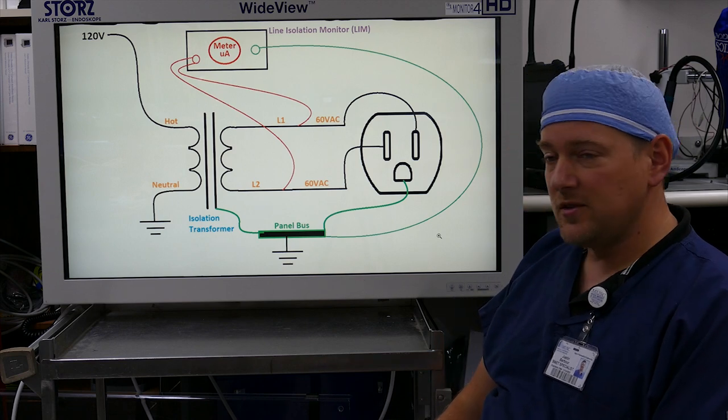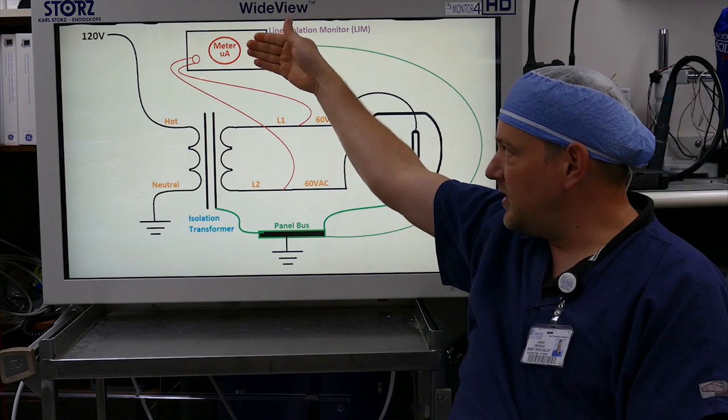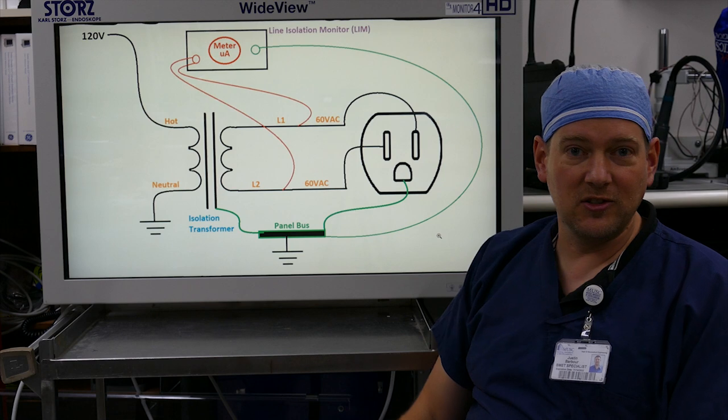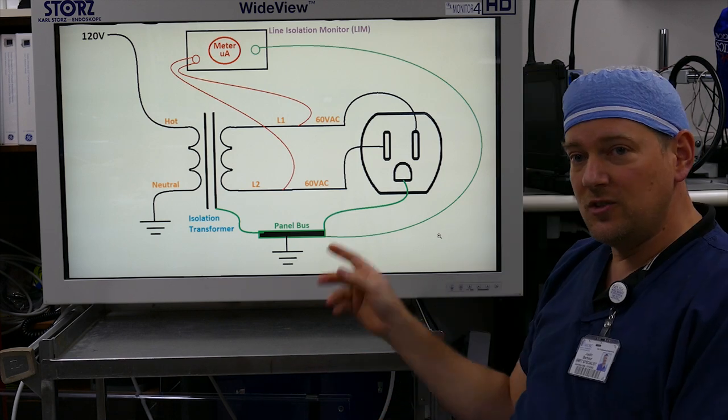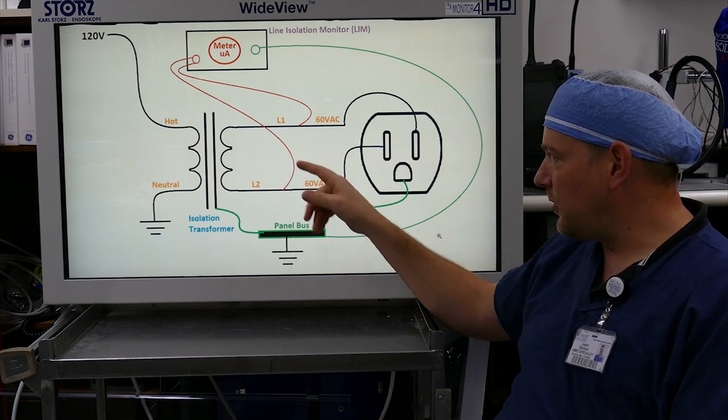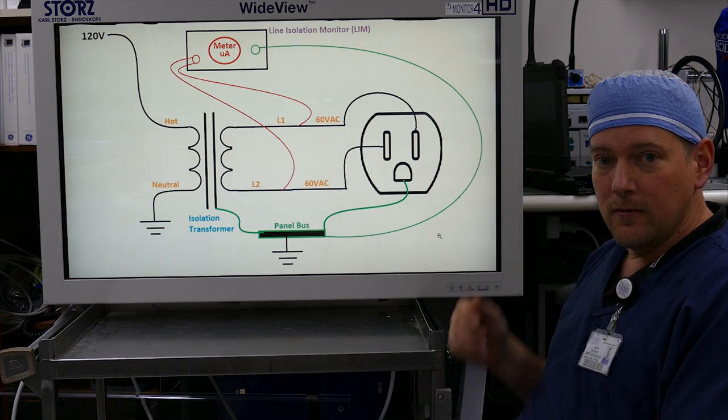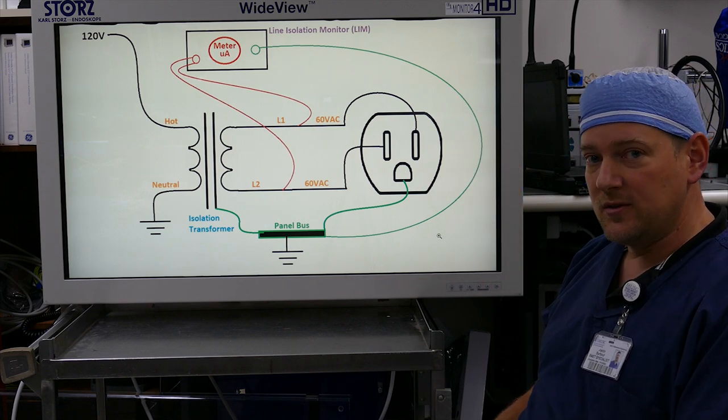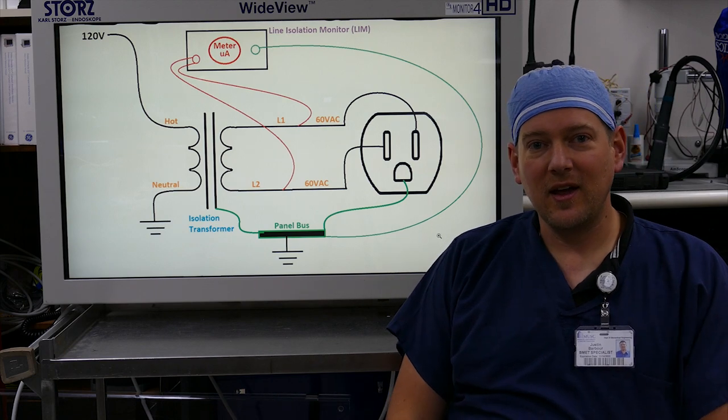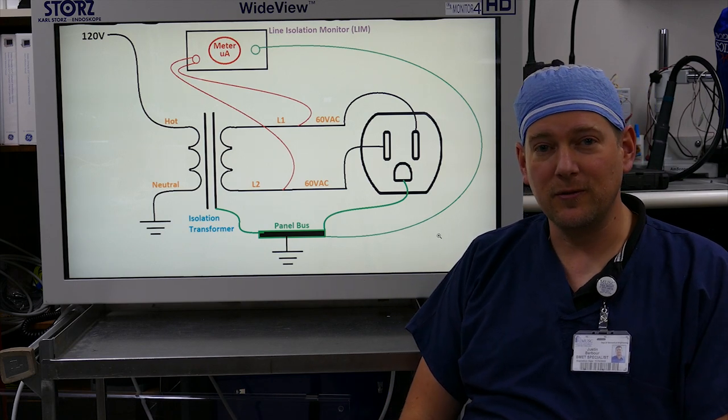That is an isolated power system. Please excuse the meter being in microamps, it's actually supposed to be milliamps. This is a general flow pattern of electrical and how it comes through a LIM panel and what to be aware of when you're troubleshooting the circuit. Thank you very much for watching and let me know if you have any other suggestions for future videos.